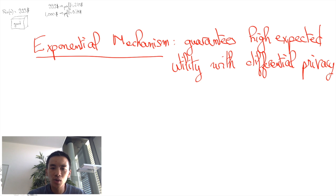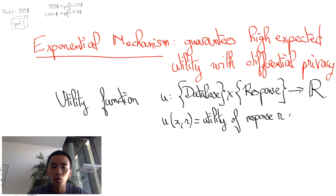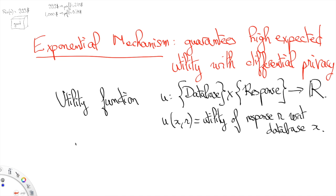The key to do so is to first measure the quality of a response with a utility function that depends on the queried database x. In other words, we consider a utility function u that goes from the set of databases times the set of responses and returns a real function.